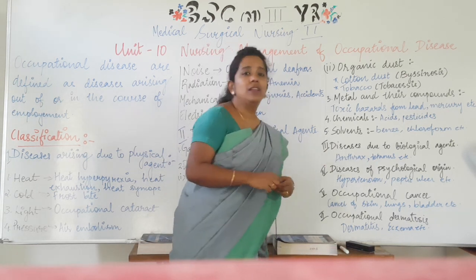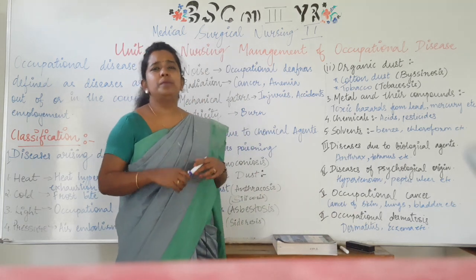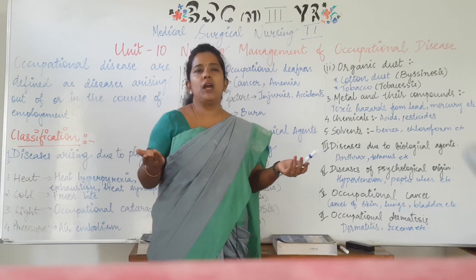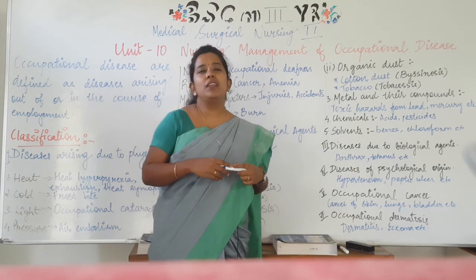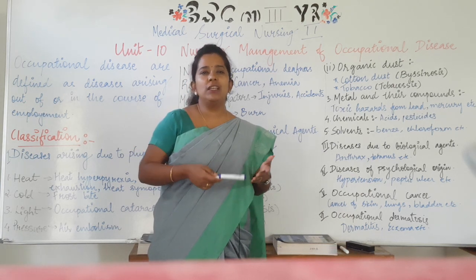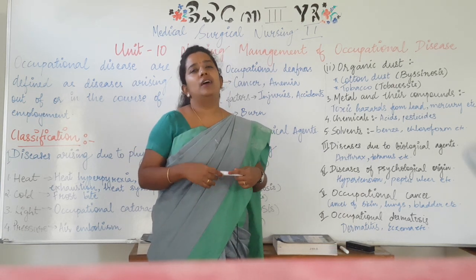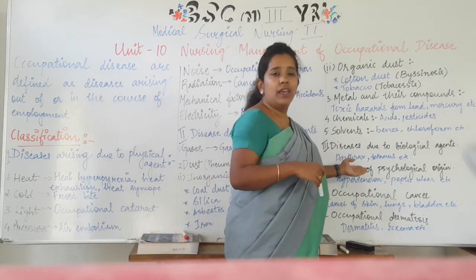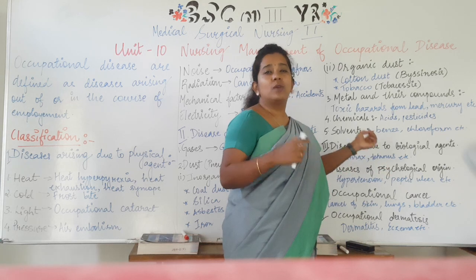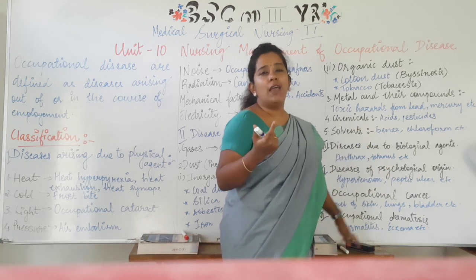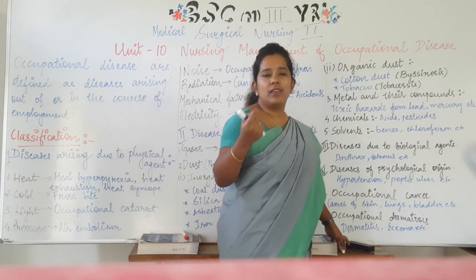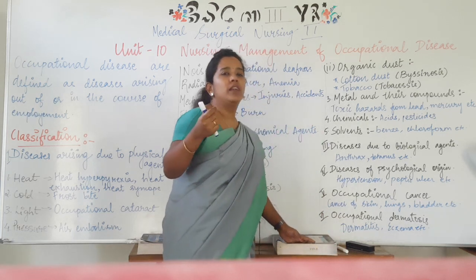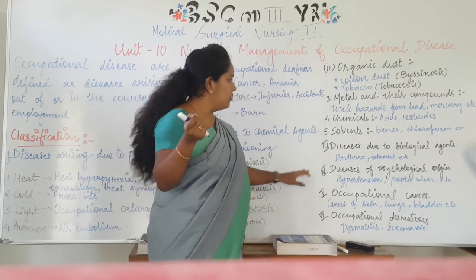Next we talk about biological agents. In a workplace where biological agents are present — such as a vector — disorders can occur. For example, anthrax or tetanus, especially when working with rusted iron. These come under the biological agent factors of occupational disorders.